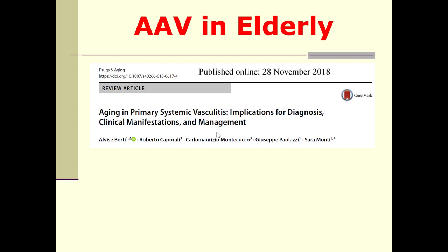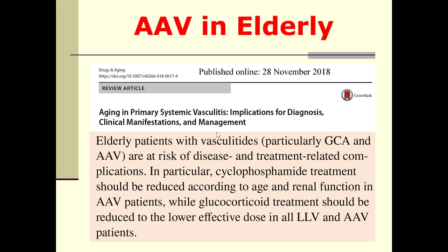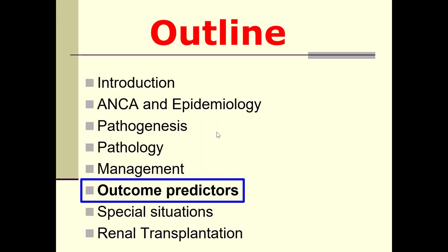Regarding elderly patients: aging in primary systemic vasculitis has implications for diagnosis and management. Elderly patients with vasculitis — particularly giant cell arteritis and ANCA-associated vasculitis — are at risk of disease and treatment-related complications. Cyclophosphamide treatment should be reduced according to age and renal function. Glucocorticoid treatment should be reduced to the lowest effective dose, and these elderly patients must be followed meticulously when treated with immunosuppressive drugs.